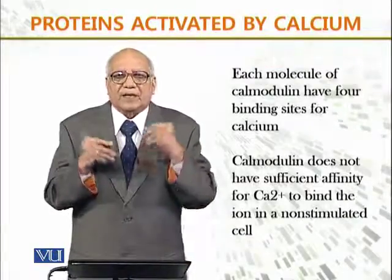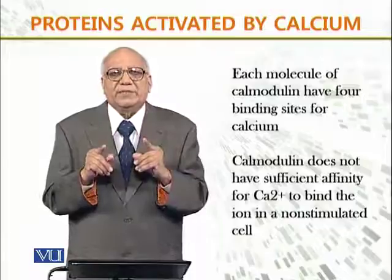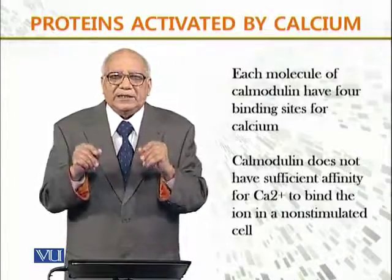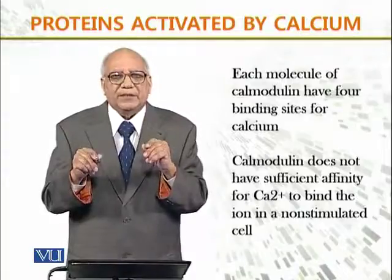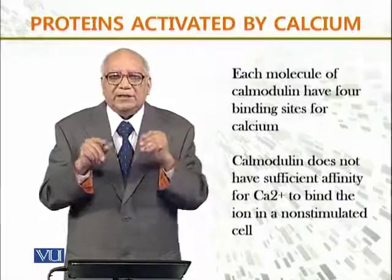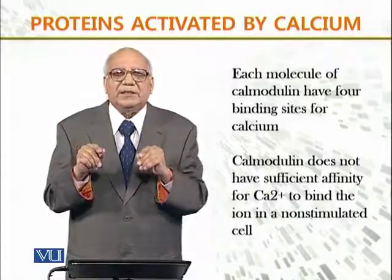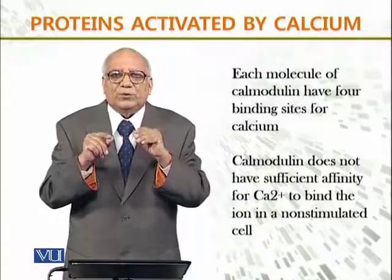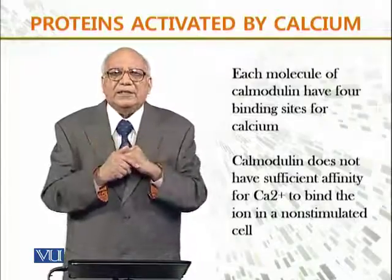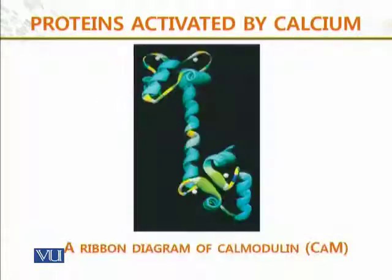Each molecule of calmodulin has four binding sites for calcium — اس protein کے ایک molecule میں چار binding sites ہیں for calcium. Calmodulin does not have sufficient affinity for calcium to bind the ion in a non-stimulated cell — یہ بھی یاد رکھیں کہ جب cell non-stimulated ہوتا ہے، اس کو کوئی stimuli نہیں مل رہی، تو calmodulin کی affinity for calcium اتنی زیادہ نہیں ہوتی — یہ اس کے ساتھ bind نہیں کرے گا.